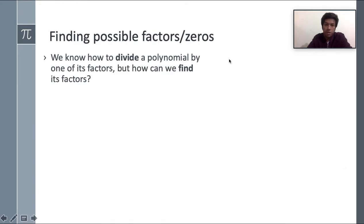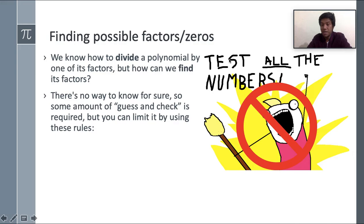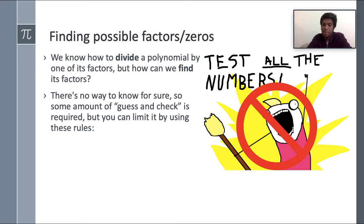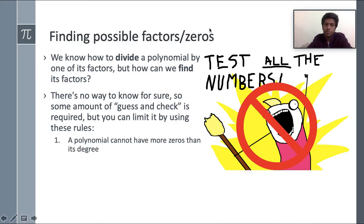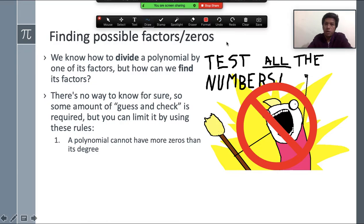Finding possible factors of real zeros is basically a long and serious task. To find all the factors of a big polynomial function, where do we start? What do we do? If we guess and check, how many numbers can we test? For example, if you have f(x) = x² minus x minus 6, you can test 1, 2, 3, 4, minus 1, minus 2, minus 3, and even fractions like 1/3 or 1/4. That is the problem with guessing and checking.